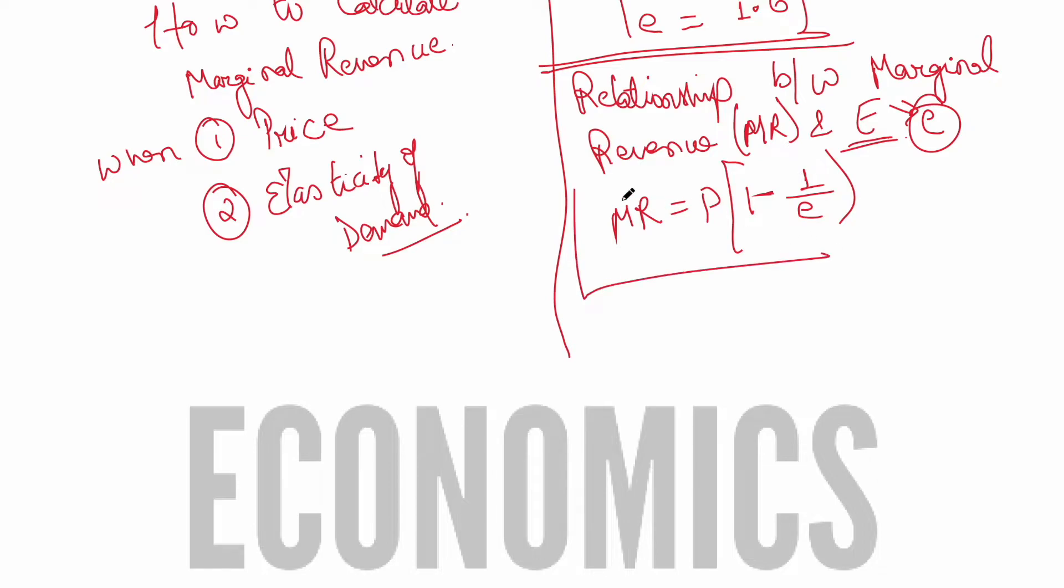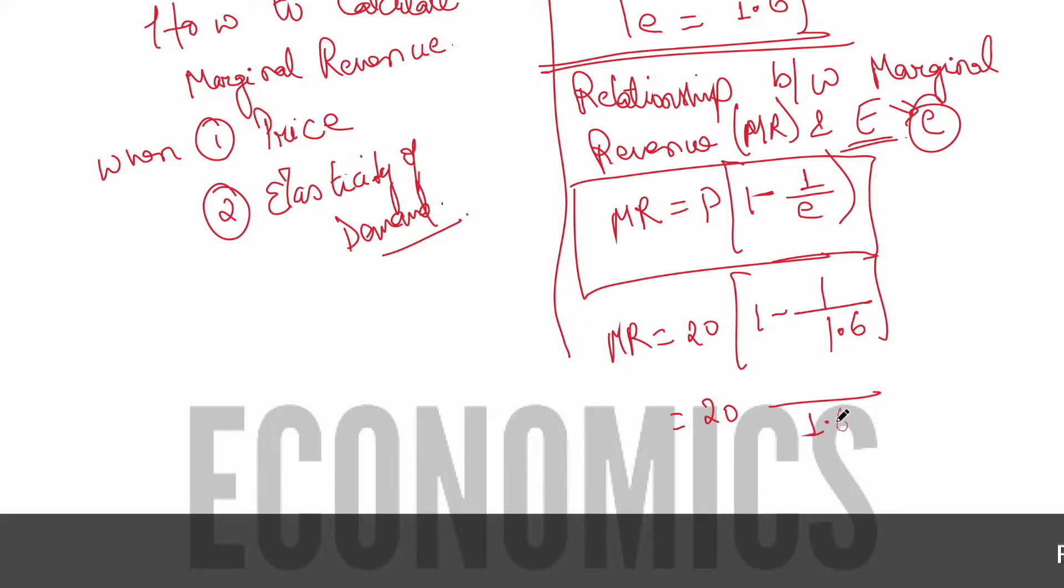So all we need to do is that we simply need to insert all these values. So we can say MR equals 20, 1 minus 1 by 1.6. Or we can say equals 20, we can take LCM 1.6, so this is 1.6 minus 1.